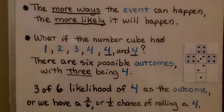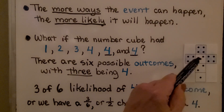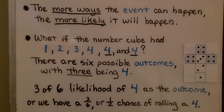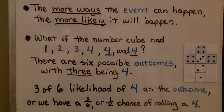The more ways the event can happen, the more likely it will happen. What if we had a number cube that had 1, 2, 3, 4, 4, 4 — those numbers? Well, there are 6 possible outcomes with 3 of those outcomes being 4. That gives a 3 out of 6 likelihood of rolling a 4, or 1 half — that's what 3/6 simplifies to. We'd have a 1 half chance of rolling a 4.